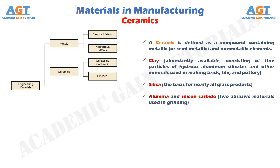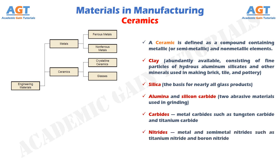Modern ceramics include some of the preceding materials, such as alumina, whose properties are enhanced through modern processing methods. Newer ceramics include carbides — the metal carbides such as tungsten carbide and titanium carbide, which are widely used as cutting tool materials — and nitrides, the metal and semi-metal nitrides such as titanium nitride and boron nitride, used as cutting tools and grinding abrasives. For processing purposes, ceramics can be divided into crystalline ceramics and glasses. Crystalline ceramics are formed from powders and then fired — heated to a temperature below the melting point to achieve bonding. Glass ceramics can be melted and cast, and then formed in processes such as traditional glassblowing.